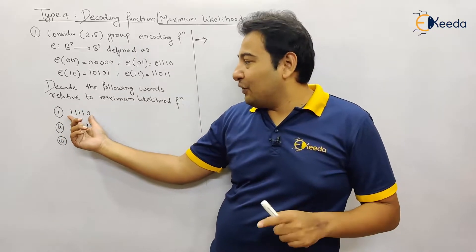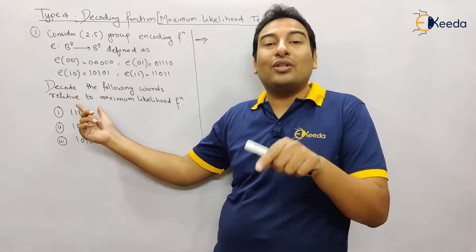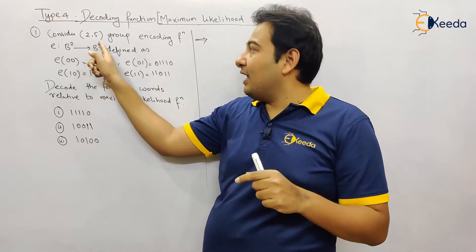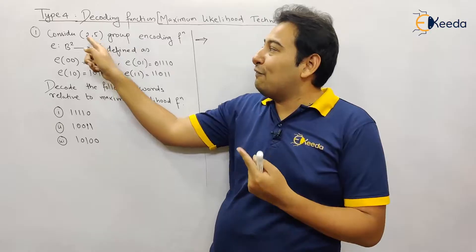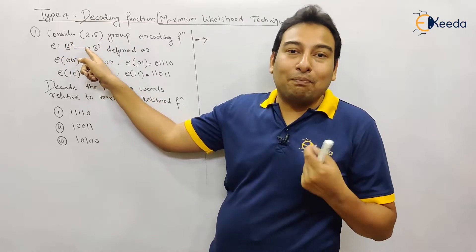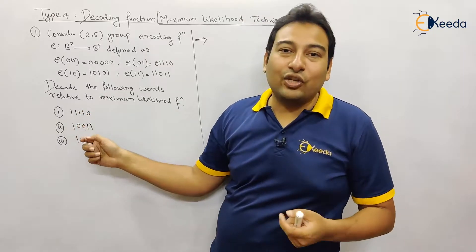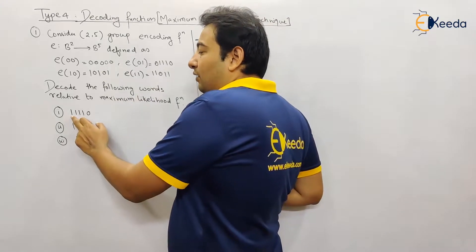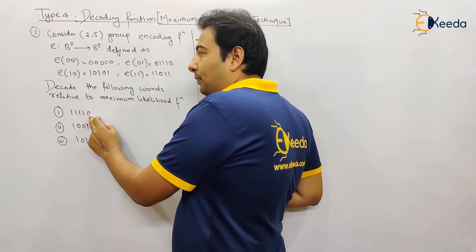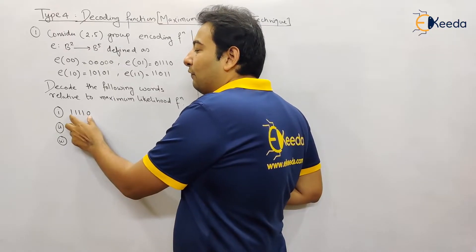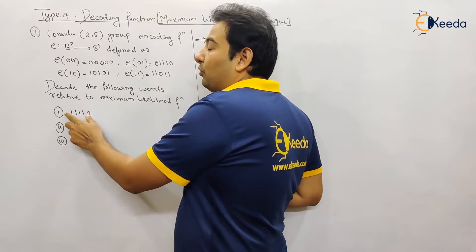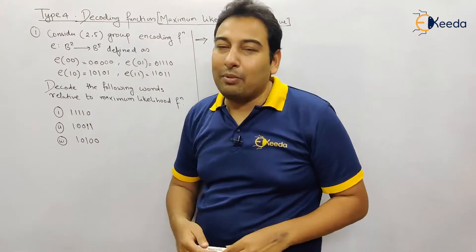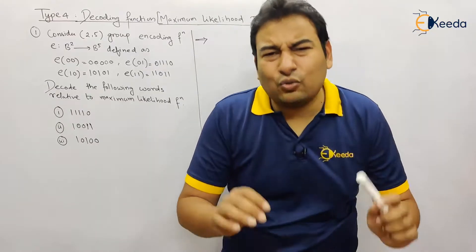We need to decode it. The sequence is already given to us — we need to decode it, we need to do the reverse process. B² maps to B⁵; this is known to us previously. Now B⁵ is given and we need to check for which B² element this corresponds to. So my aim is to check which encoding function — E00, E01, E10, or E11 — maps to this particular sequence. It's very simple.